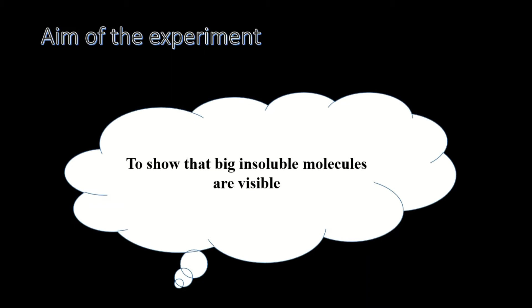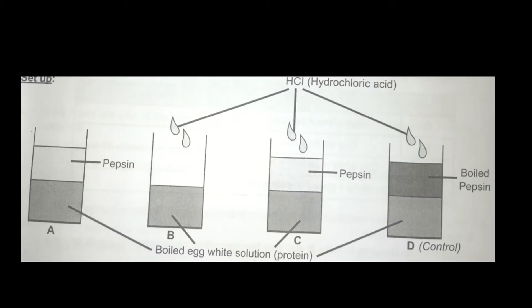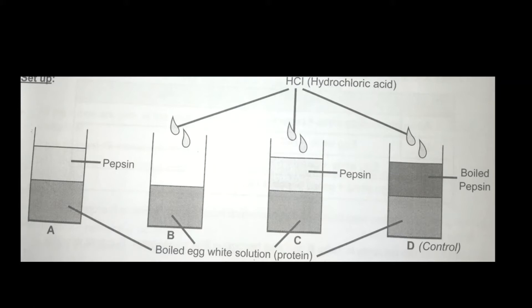In our experiment we have four test tubes: A, B, C, and D. All four test tubes contain boiled egg white solution — that is, they all contain protein. So test tubes A, B, C, and D each have boiled egg white solution. What differs between them is what else is added to each one.